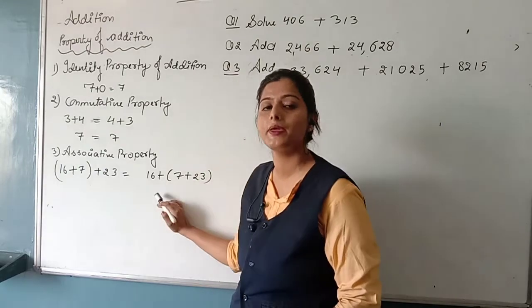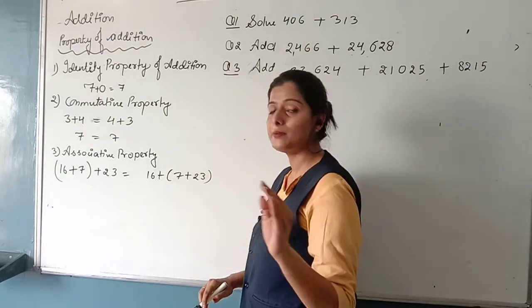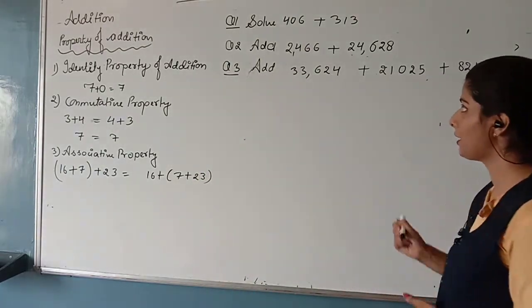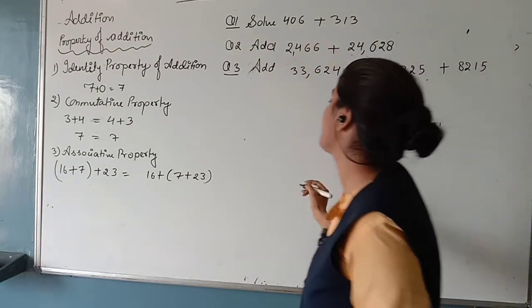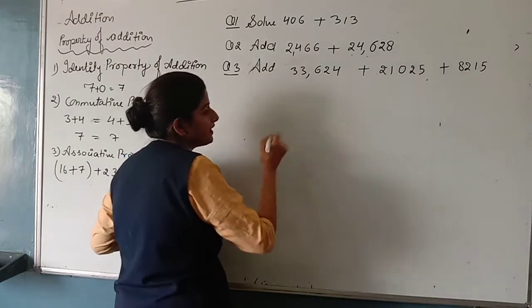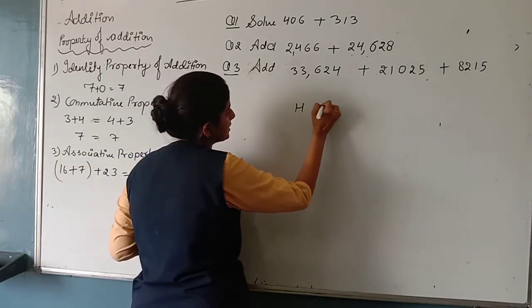Here we have a related example. Here 406 plus 313. We have to add using the place value system.